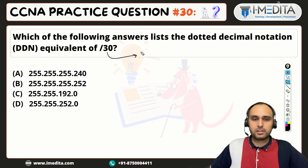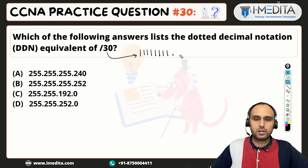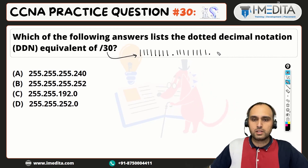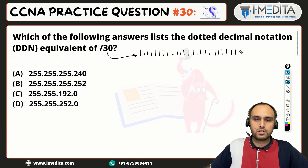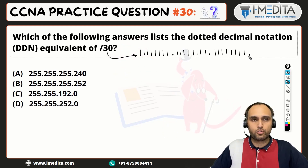So if I write down 30 ones, that will be 1 through 8 in the first octet, then a dot, 1 through 8 in the second octet, then 1 through 8 in the third octet, then 1, 2, 3, 4, 5, 6 in the fourth octet — giving us 30 ones total across the four octets.